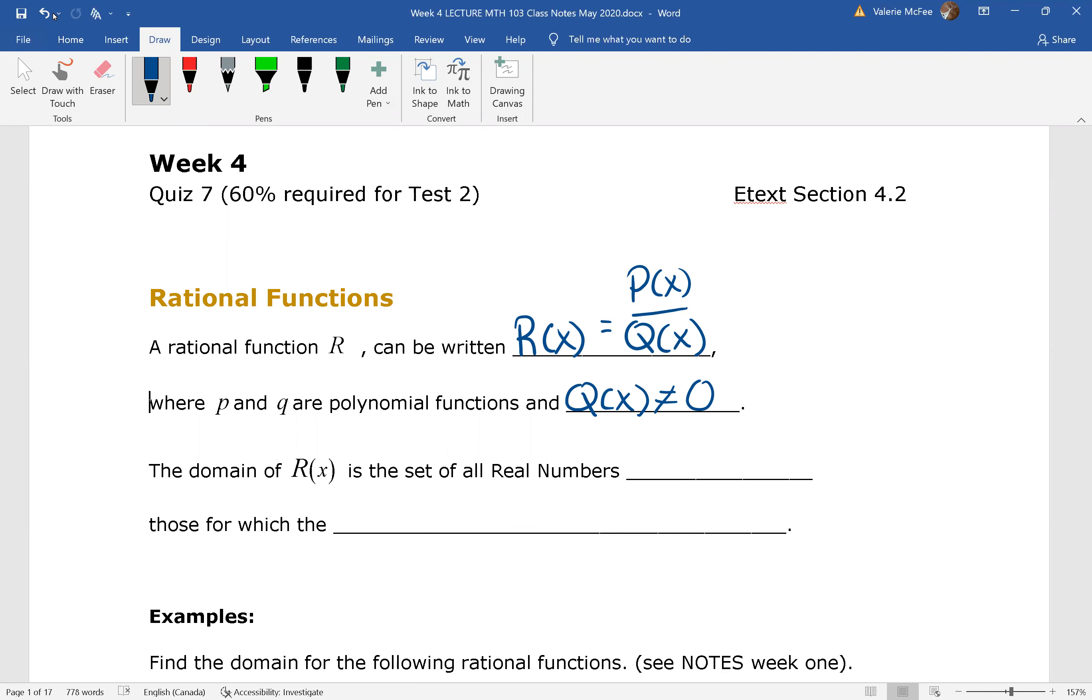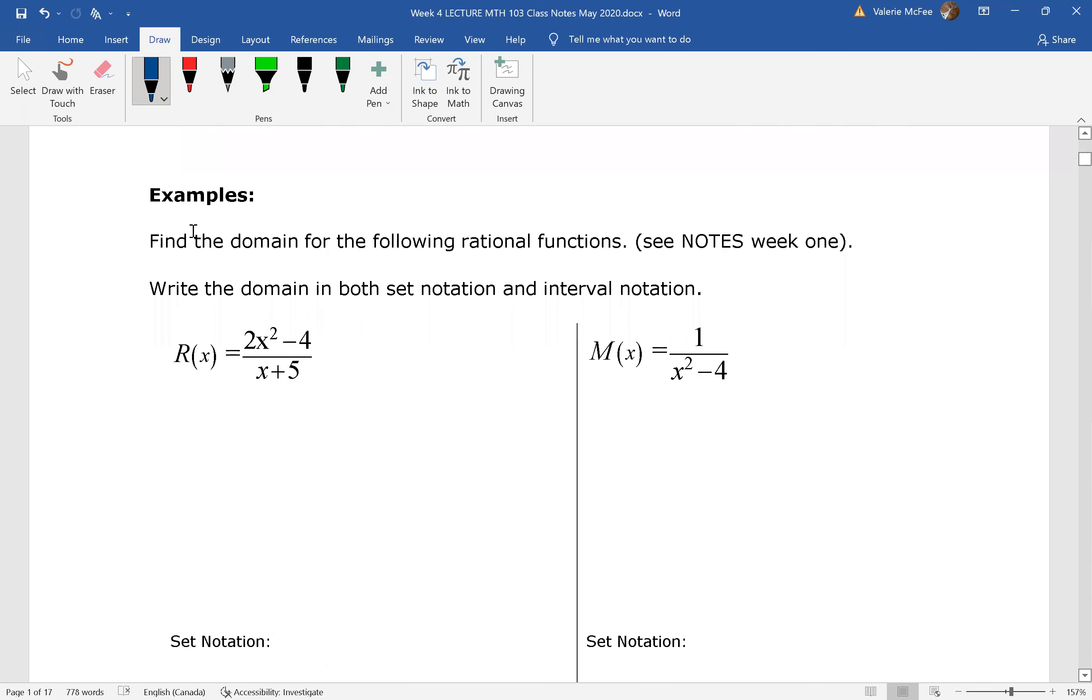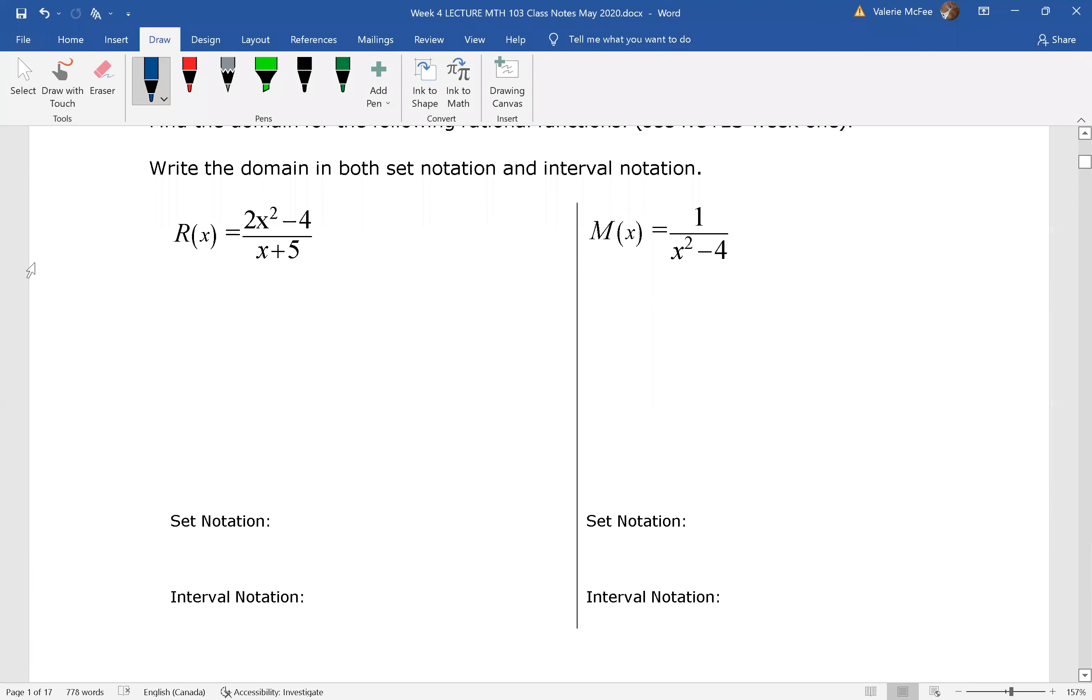Remember that the domain for our rational function is the set of all real numbers, except those for which the denominator equals zero. We know that already - we looked at finding domain restrictions. So any values of x that make the denominator equal zero are not permitted. We have some notes on that in week one, so if you want to go back and do a quick review, you can. But here we go. Why don't you find the domain for R(x) and M(x)?